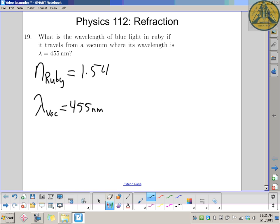Then using that and the speed of light in ruby, you could figure out what the wavelength is in ruby, but you'd have to change all the units to meters and Hertz and meters per second for speed. I'm going to do it a way that's a little bit easier, using the definition of the index of refraction.